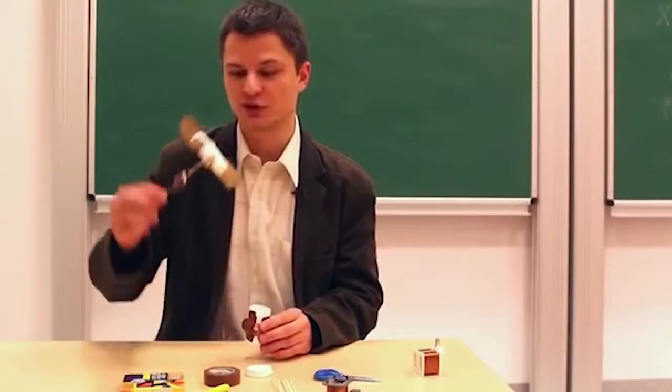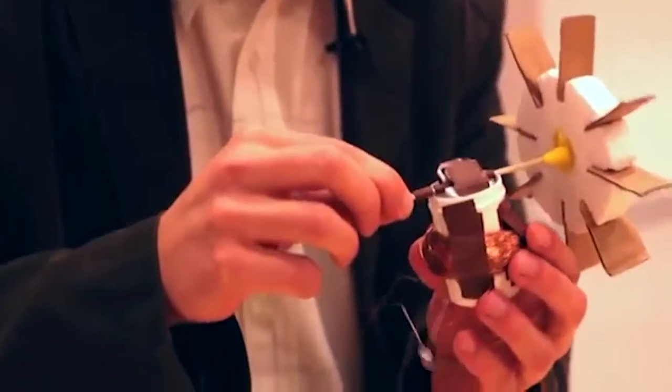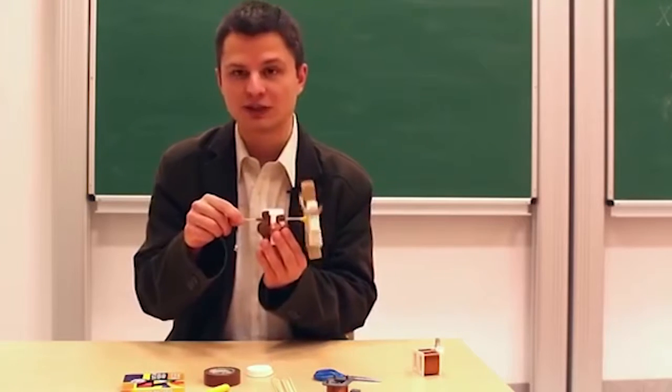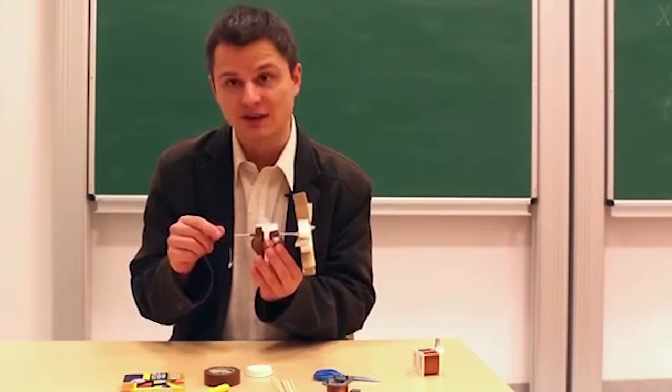Now all that remains to be done is to assemble the whole. In other words, attach the rotor and the skewer to our generator. In order to balance the weight of our rotor, it is best to attach a small piece of plasticine to the other end of the skewer.